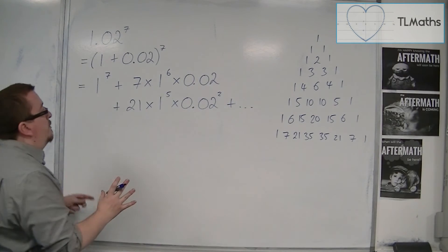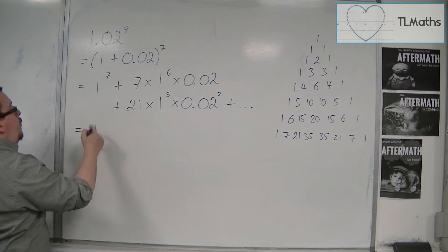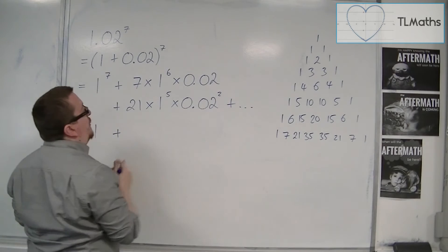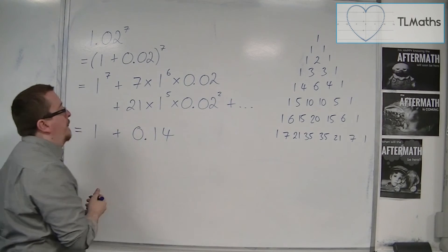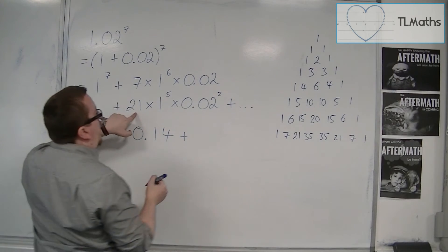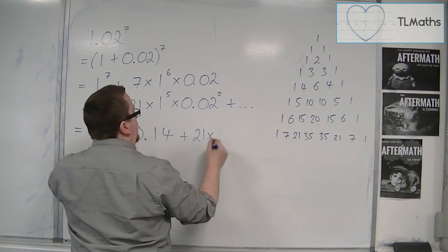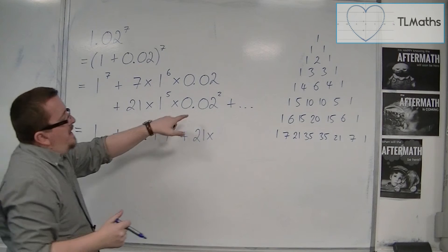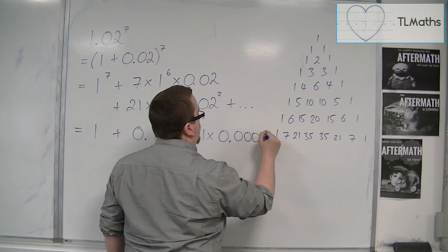So I've got 1 plus 7 times 0.02, so that's 0.14, plus, now here I've got 21 times 0.02 squared. So 21 times, well, 0.02 squared will get me 0.0004.